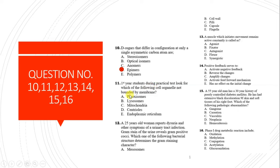Question 11: During a practical test, students look for a cell organelle not bounded by a membrane. Options include peroxisomes, lysosomes, mitochondria, centrioles, and endoplasmic reticulum. The correct option is centrioles, because centrioles are not bounded by a membrane.